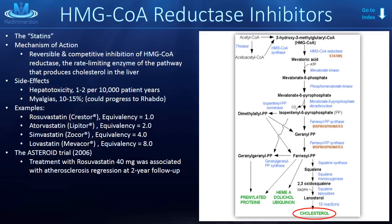I organized this list by equivalency. Rosuvastatin is the strongest of these four statins with an equivalency of 1.0, while lovastatin is the weakest with an equivalency of 8 — meaning you would need about 8 mg of lovastatin to equal the effect of 1 mg of rosuvastatin. If you really want to impress your preceptors, look up the ASTEROID trial, done in 2006, which showed that patients treated with 40 mg of rosuvastatin had a regression of their atherosclerotic plaques at two-year follow-up.